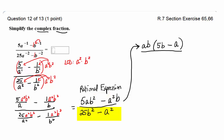Now in the denominator, we have 25b squared minus a squared. There's no GCF we can factor out, but it fits the pattern of a difference of squares, right? 25 is a perfect square, b squared is a perfect square, a squared is a perfect square.